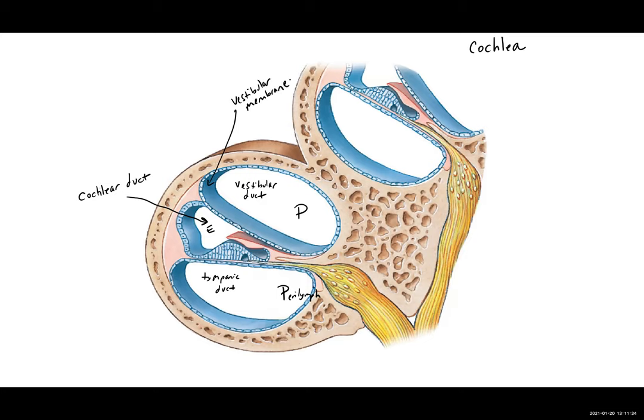When we look inside the cochlear duct, we see a structure right here, which is called the spiral organ or the organ of corti. Separating the tympanic duct and the cochlear duct is the basilar membrane.